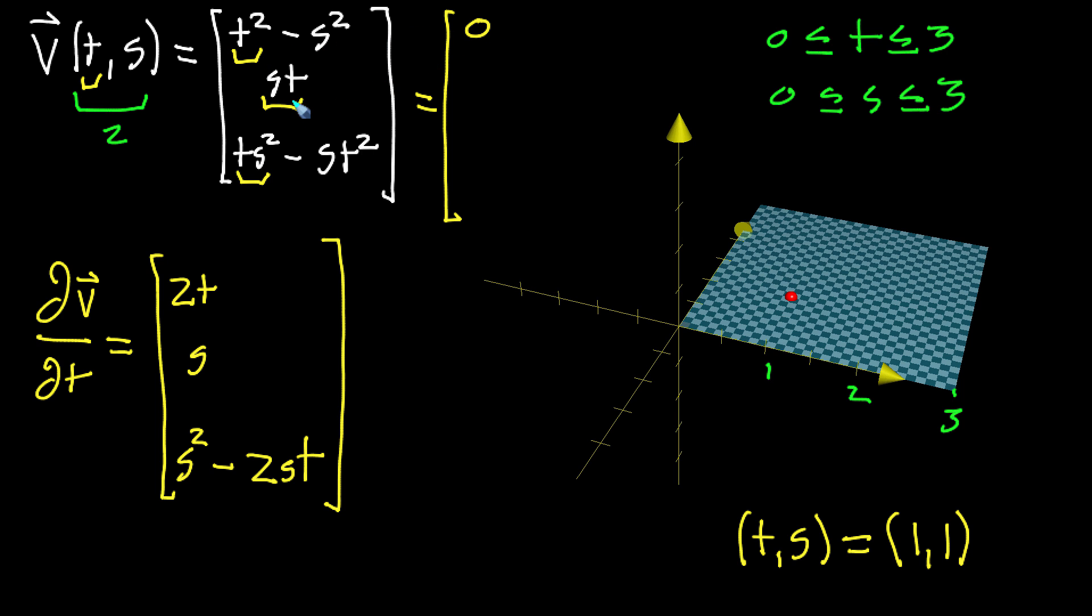That middle part is going to be 1 times 1, which is 1. And then over here we're going to have 1 times 1 squared, which is 1, minus 1 times 1 squared, which is again 1. And you can probably see because of the symmetry there, those also cancel out, you get 0.